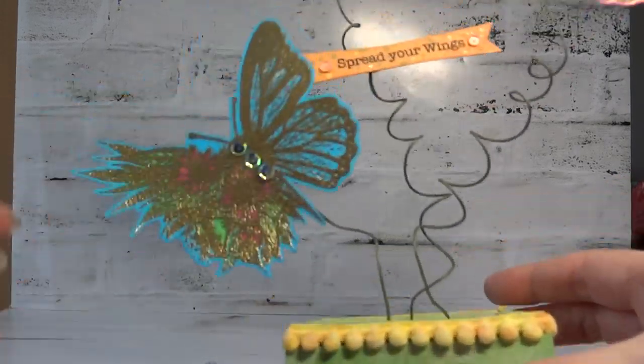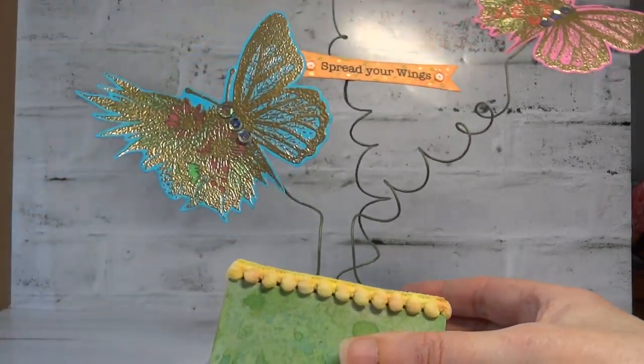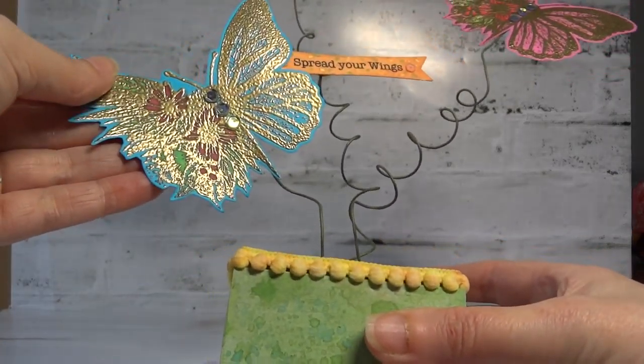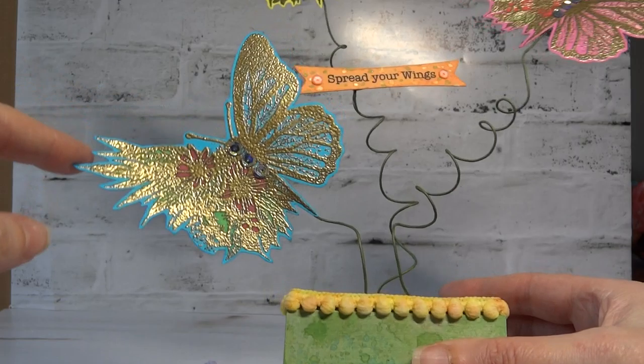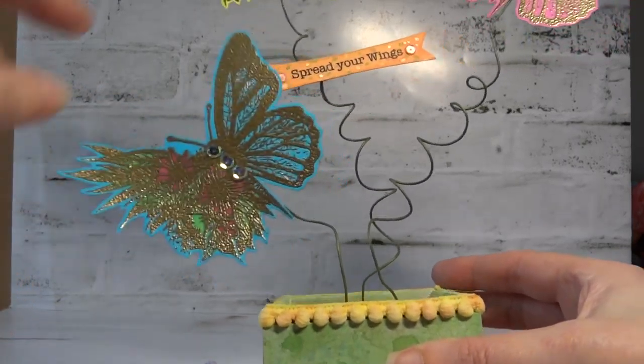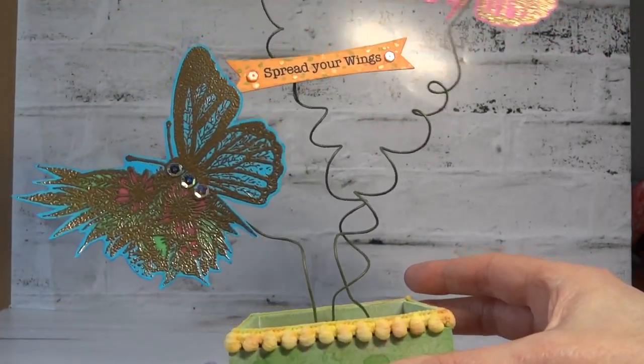I stamped the butterflies in Versamark ink onto colored card. I've chosen three main colors: the Vibes in Sky Blue, Hot Pink, and this one I think was the Lemon Spritz. I stamped the butterfly and then heat embossed in gold.